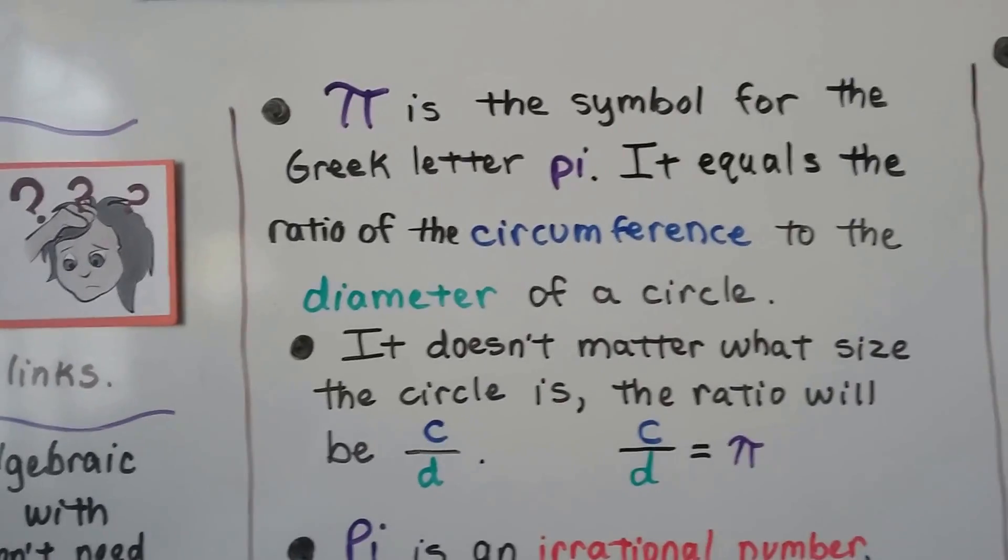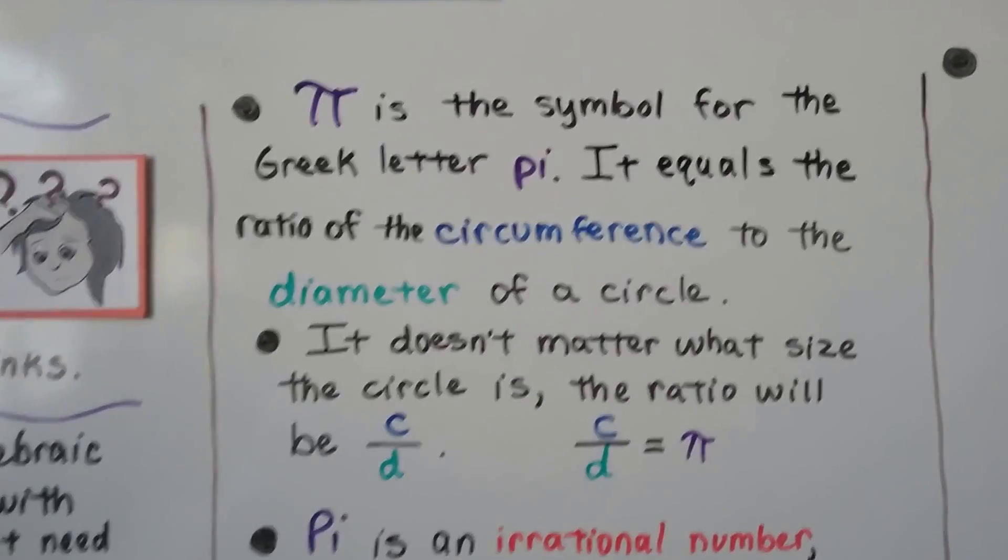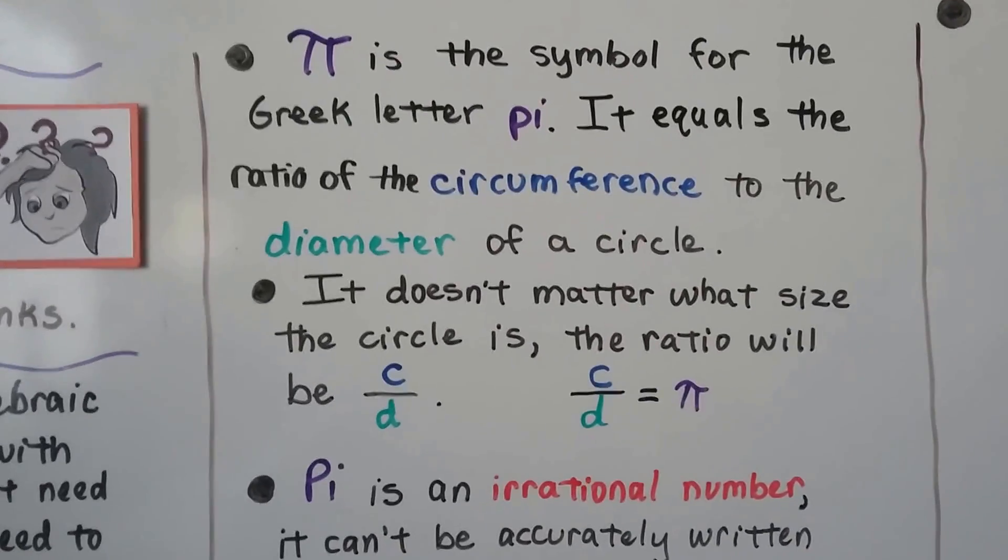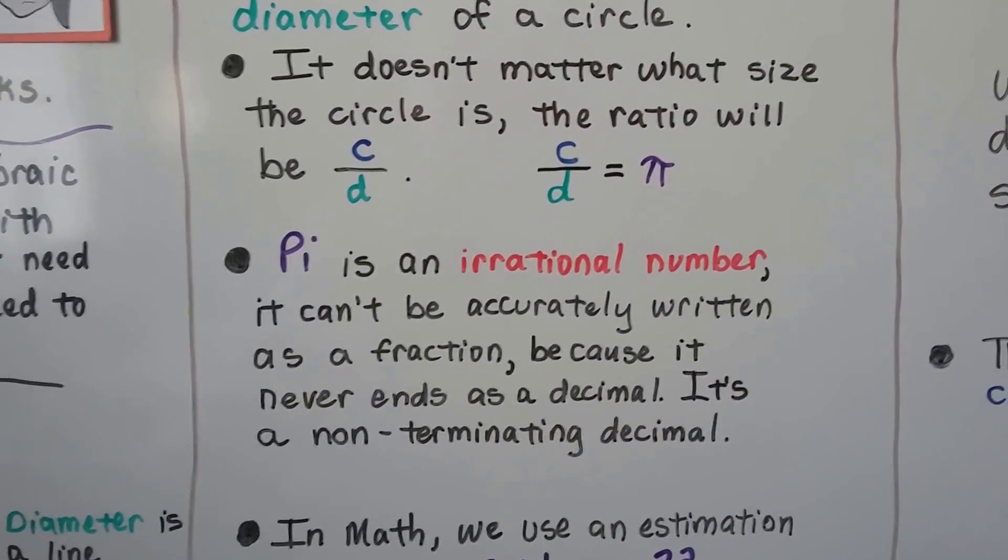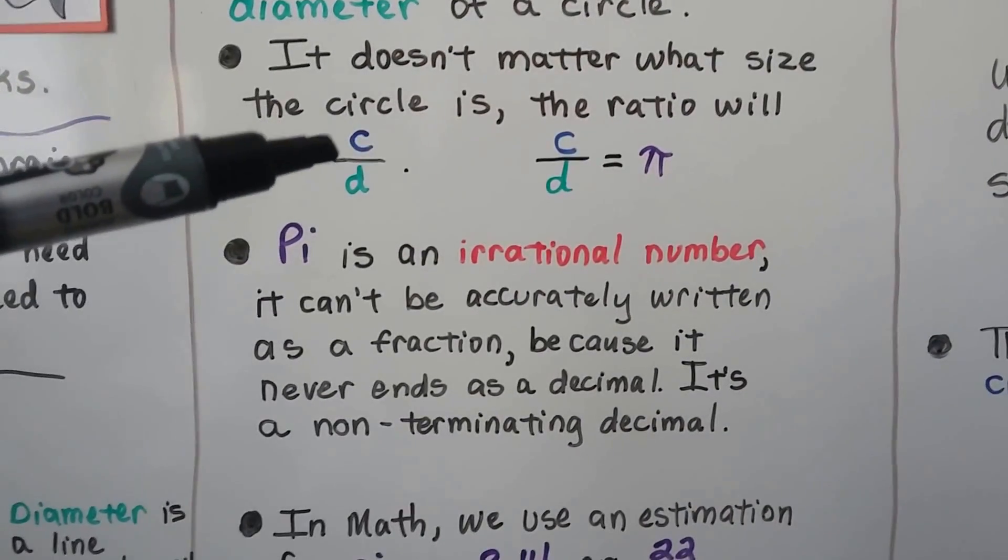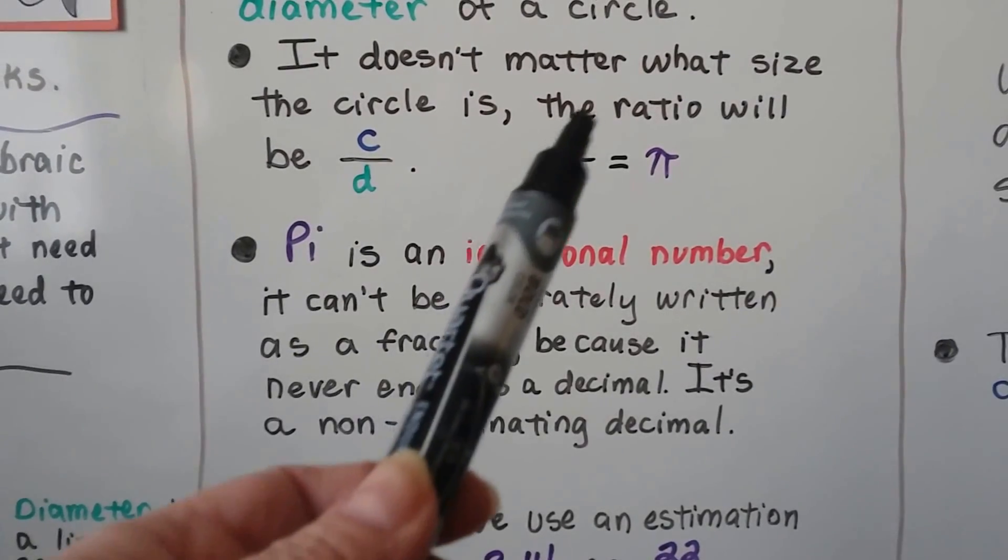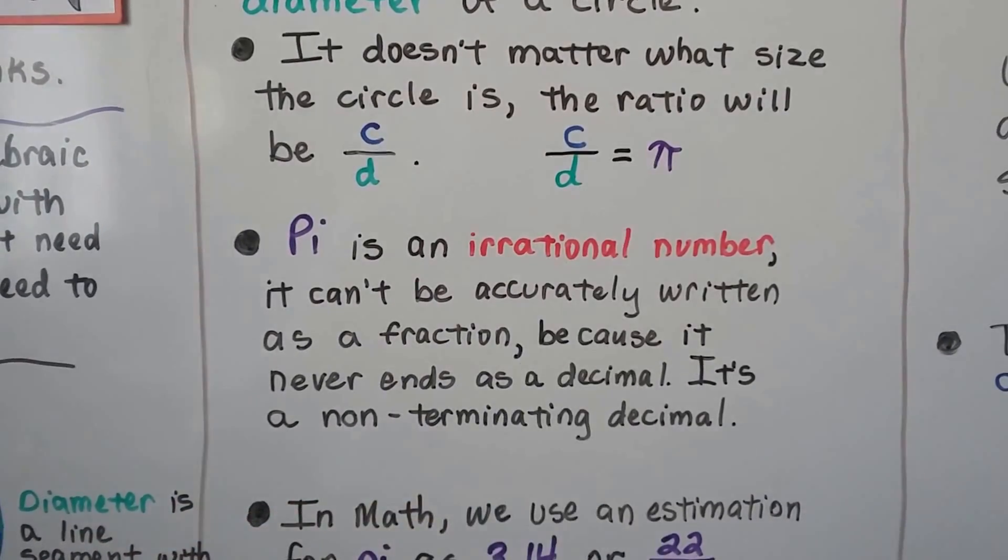This symbol is a symbol for the Greek letter pi, and it equals the ratio of the circumference to the diameter of the circle. And it doesn't matter what size the circle is, the ratio will still be circumference divided by diameter. So we say circumference divided by diameter is going to equal pi.